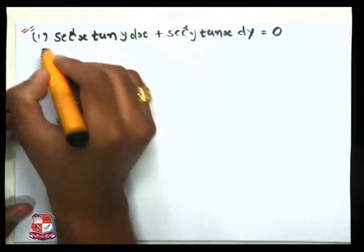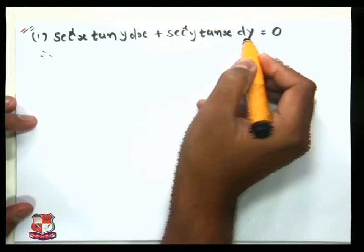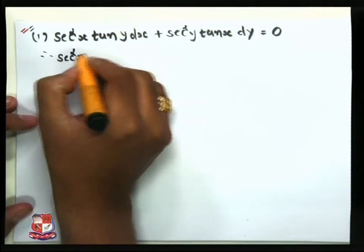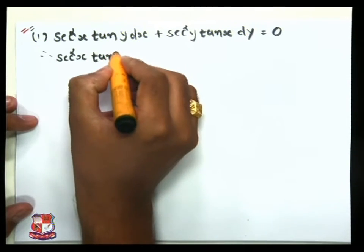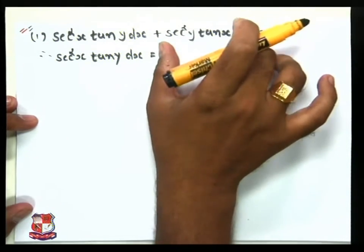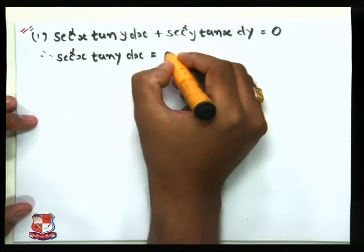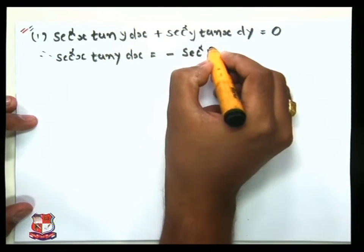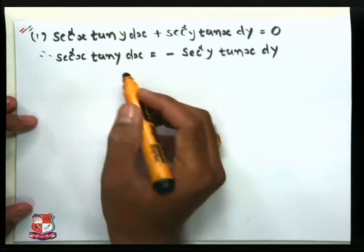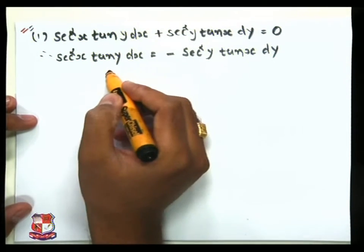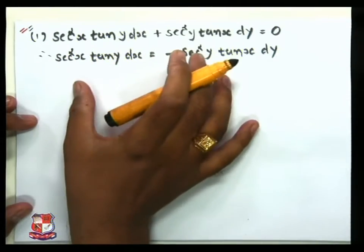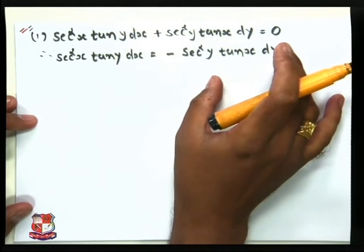First of all, we move sec²y·tan(x) dy from the LHS to the RHS side with a negative sign, so we have sec²x·tan(y) dx = −sec²y·tan(x) dy. To solve the differential equation, we must arrange x terms on one side and y terms on the other side.